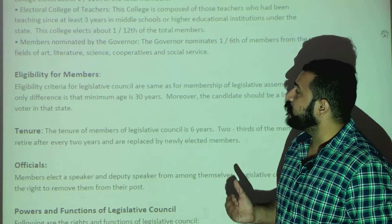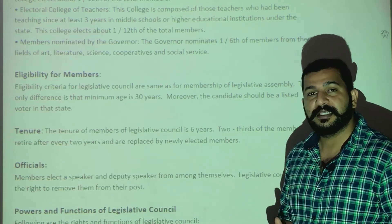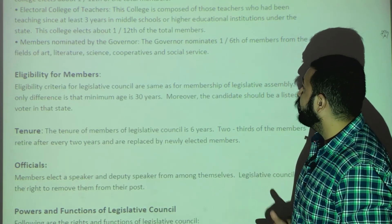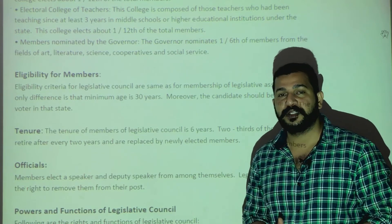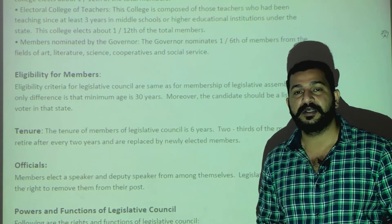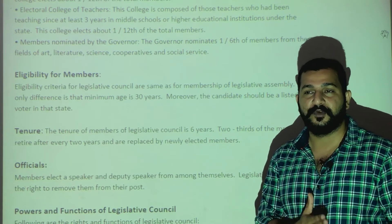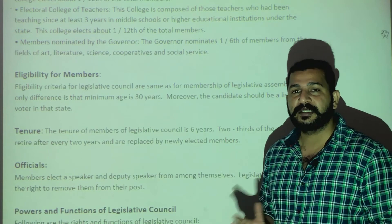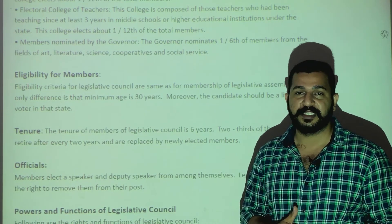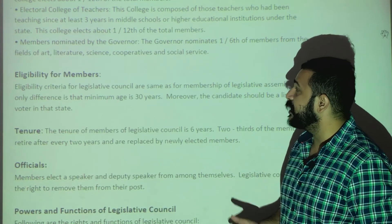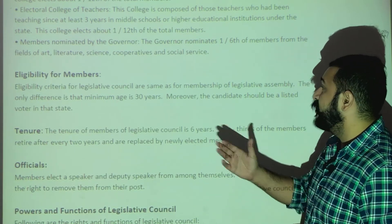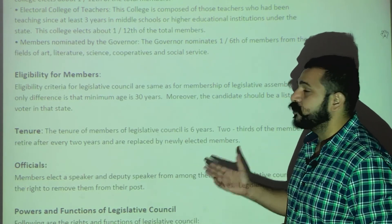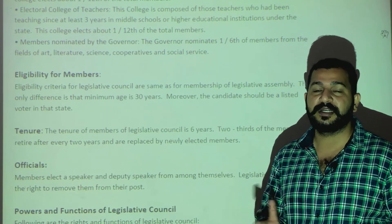The last category is members nominated by the governor. One-sixth of the total Legislative Council members are nominated by the governor. Whether the council has the minimum 40 or the maximum, one-sixth will be nominated. These nominated members come from particular fields: Arts, Literature, Science, Cooperative Movement, and Social Service. The governor nominates persons from these specific fields.